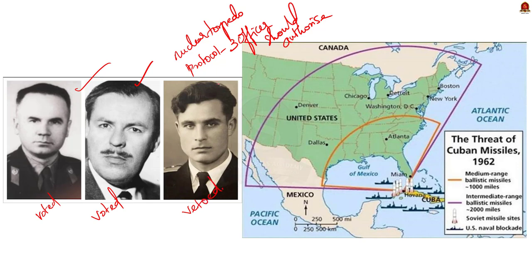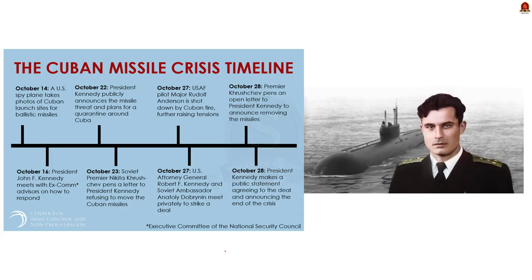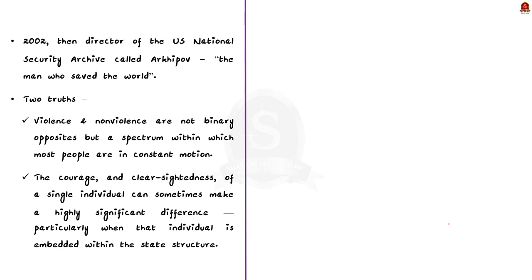It was Arkhipov, as chief of staff of the brigade, who refused to go along and did not vote to fire the nuclear weapon. Arkhipov, who had a reputation for being courageous, finally persuaded the captain of the submarine to surface and await orders from Moscow on October 28, 1962. That is the day after the incident happened, both Washington and Moscow backed down and the missile crisis ended. So B-59 peacefully sailed back to the Soviet Union. In 2002, the then Director of the US National Security Archive called Arkhipov 'the man who saved the world.'